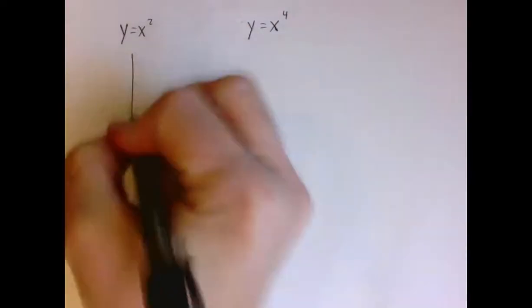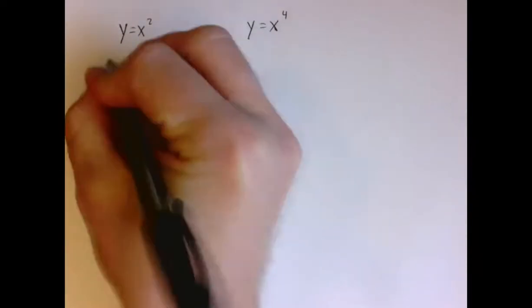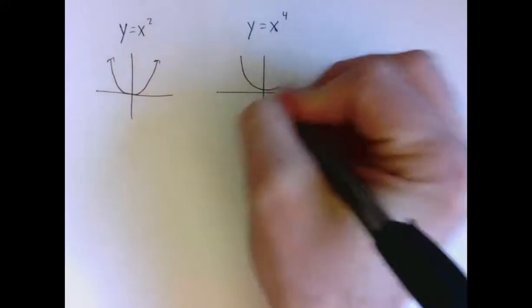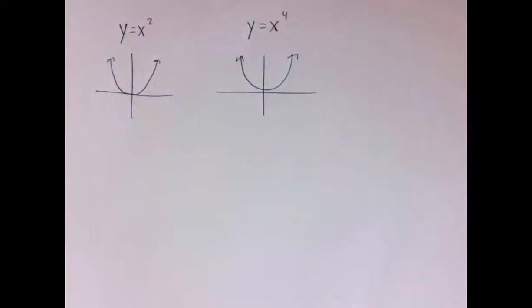So, sometimes when I ask students, do you know the shapes of the basic families of functions? They say, yeah, of course. And so I say, alright, graph me x squared and x to the fourth. And they say, okay, x squared looks like this, x to the fourth looks like this. That's their rough sketch.